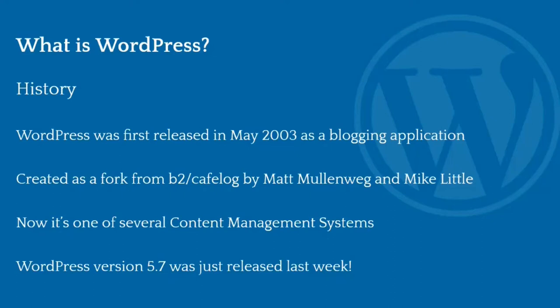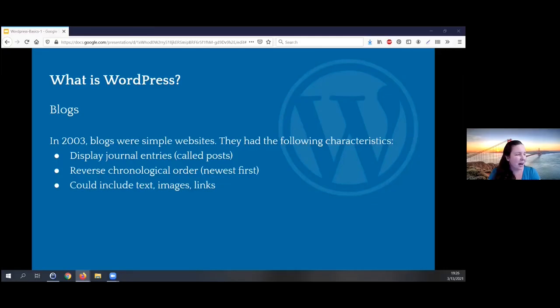Now it is one of several content management systems, and we'll talk about what a content management system is. It's now at version 5.7 — 5.7 was just released last week, I think it might've been Tuesday. In 2003, blogs were simple websites with some basic characteristics: they could display journal entries called posts, displayed in reverse chronological order — so newest first — and they could include text, images, and links. And that's about it.